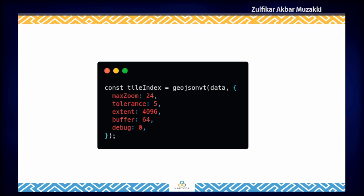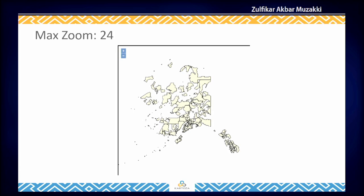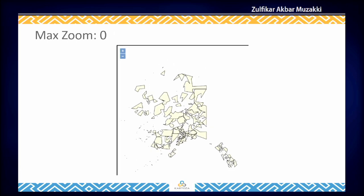First, we create the tile index — it's a GeoJSON VT object. We provide the data, which is the GeoJSON we want to render, and also some parameters. The first is maxzoom, which is the maximum zoom at which GeoJSON VT will preserve the details of our GeoJSON. If the zoom level is higher than that, GeoJSON VT will do some simplification. For example, if maxzoom is set to 24 and we're on zoom level 2, the shape stays the same; but if maxzoom is set to zero and we are on zoom level 2, it does some simplification on the features being rendered.